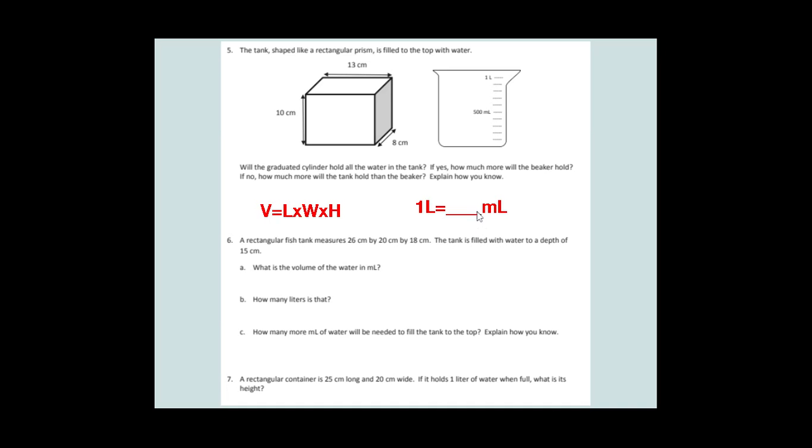In my classroom, we have a video that we watch where they have an acronym King Henry died by drinking chocolate milk. And it has all of our metric unit conversions. It's going to be really easy for you to research that. But also look here on this graduated cylinder. The very bottom, it goes from zero all the way up to one liter.